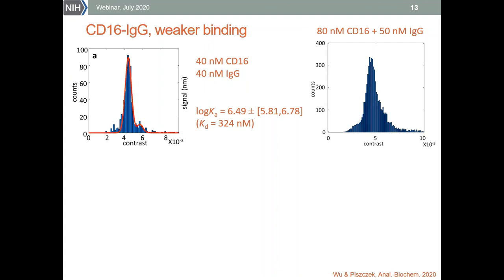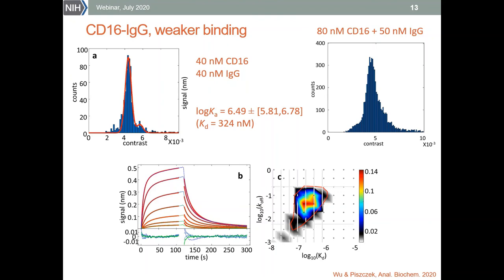We can try to increase protein concentration to populate more complexes, but this results in a very high density of landing events that start to overlap, affecting the quality of the data. The mass distribution obtained for total protein concentration of about 130 nanomolar shows wider peaks and we are losing resolution — indicating the concentration is too high. We can still calculate the binding constant from the first distribution and obtain accurate results validated by BLI, but this binding is definitely approaching the limit of what we can measure without special methods.